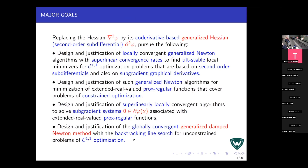Now we consider problems which are not C2 smooth — they have some non-smoothness at least in the second order. Instead of the classical Hessian or its approximation, we use a construction from variational analysis called the generalized Hessian, or sometimes second-order subdifferential. This construction goes back to the classical Hessian when the function is C2 smooth, but otherwise it is a set-valued mapping that is positive homogeneous, and we have calculus rules to compute it.